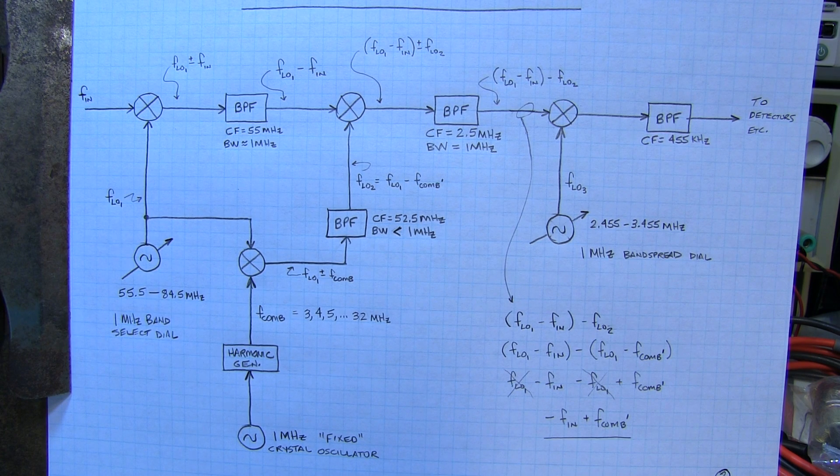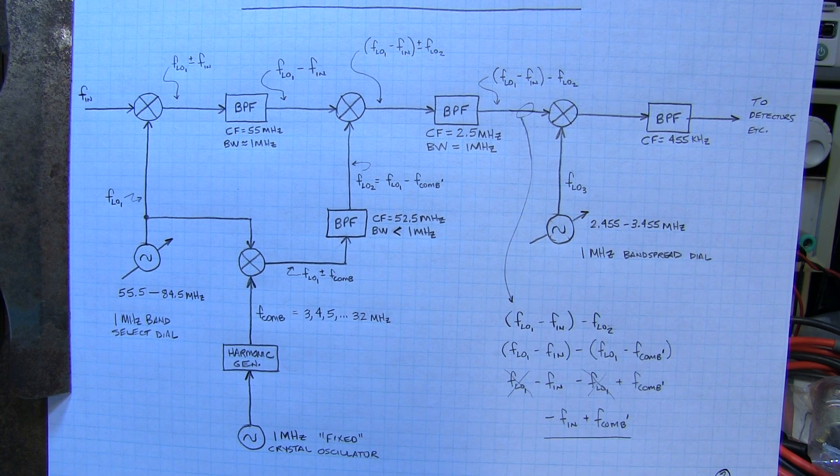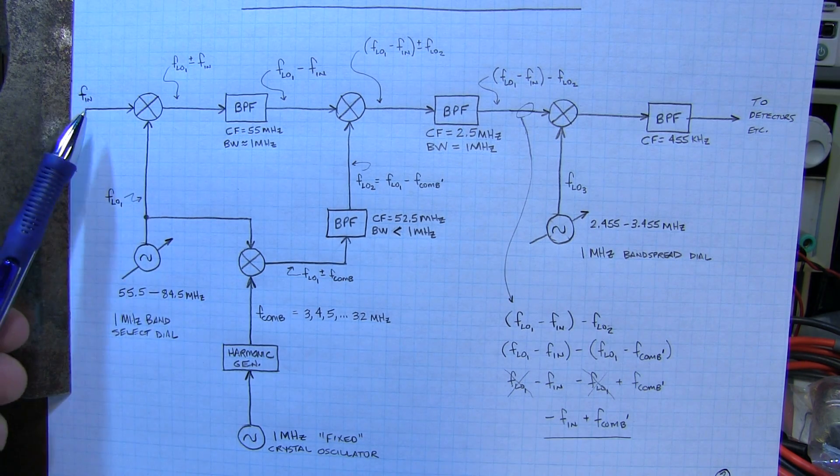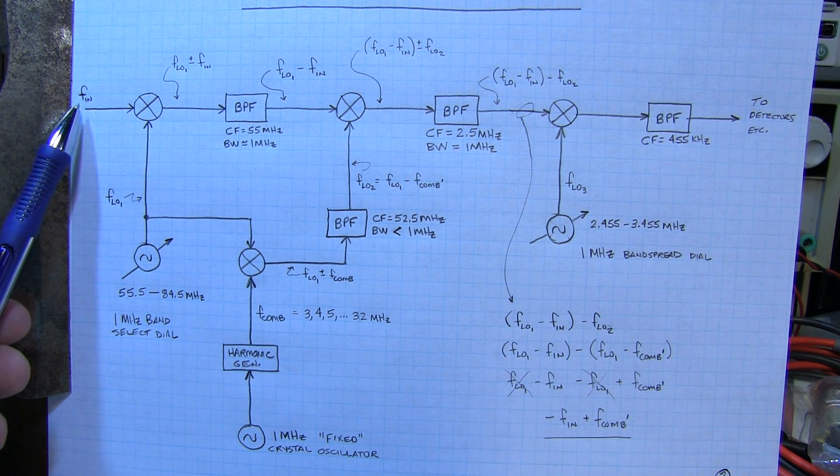The Wadley Loop is a triple conversion architecture. It may look a little complicated in this block diagram, but it really is quite simple to understand. Let's walk through it step by step. So the front end, we've got our input signal coming from the antenna and preamp.